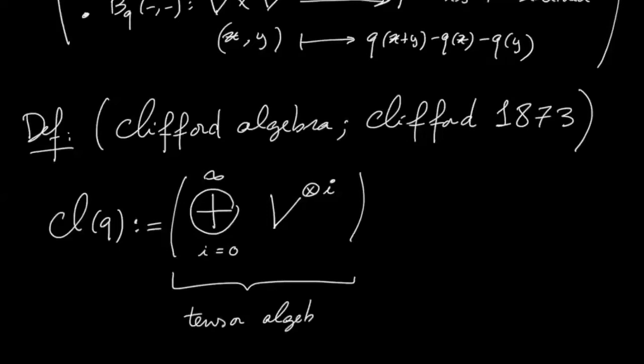So it's an algebra because we can concatenate elements, it's a non-commutative algebra. And then we mod out by a two-sided ideal generated by the elements of the form X tensor X minus q of X.